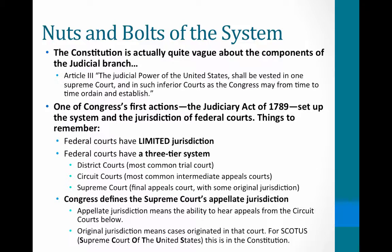And then the Supreme Court, which is the final appeals court. It does have some original jurisdiction — cases that are heard there and only there — but we'll talk about that. Congress defines what the Supreme Court can hear as an appeals court. Appellate jurisdiction means the ability to hear appeals from the circuit courts below.